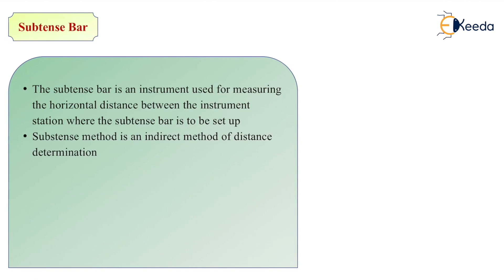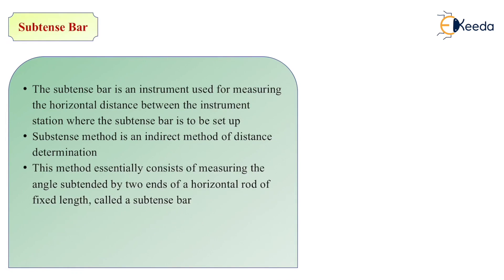Subtense bar method is an indirect method of distance determination. This method essentially consists of measuring the angle subtended by two ends of a horizontal rod of fixed length called a subtense bar.